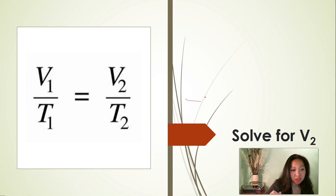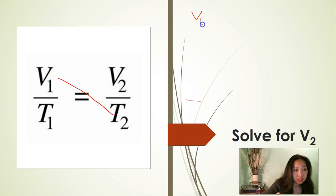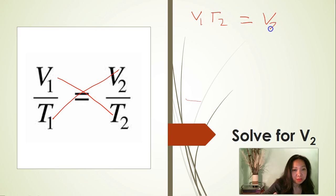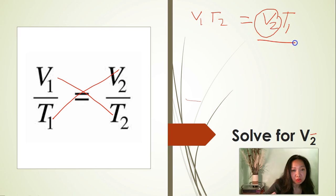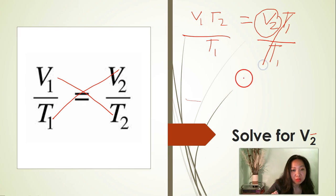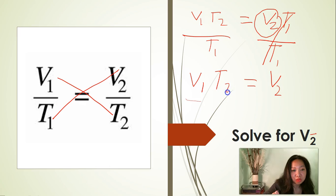We are going to cross multiply first. V1 times T2 is equal to V2 times T1. Now solve for V2. Divide both sides of the equation by T1. Cancel T1. That leaves us with V2 is equal to V1 times T2 divided by T1.